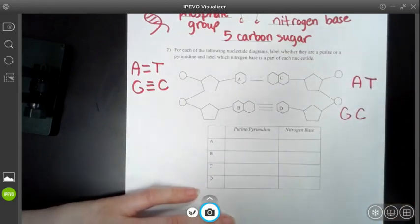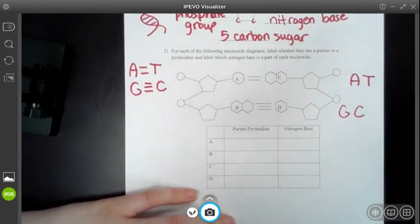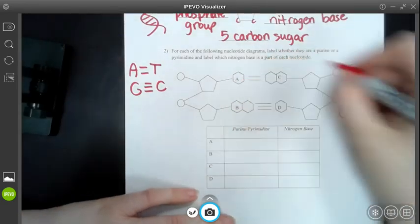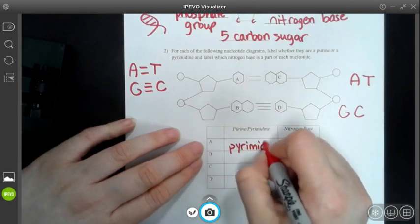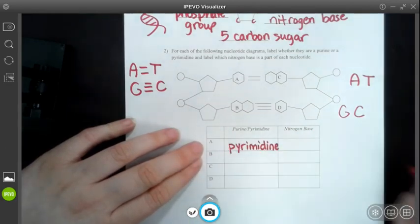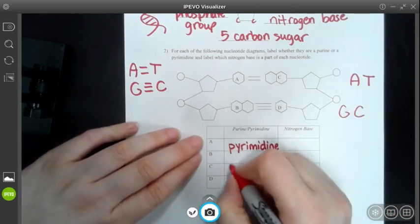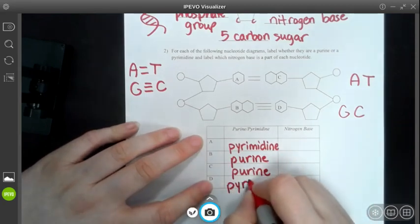Well, which one is which? So what I need to do is I need to look at the number of circles that we have here. So this is a single, which means A is a pyrimidine. I'm going to fill this in. C would be a purine. B is also a purine. And then D would be a pyrimidine.